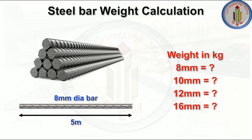Hey friends, welcome back to Civil Engineering Mastery. In this video we are going to discuss how to calculate the steel bar weight in kgs. We'll be dealing with different diameter bars: 8 mm, 10 mm, 12 mm, 16 mm, 20 mm, 25 mm, 32 mm, and so on.